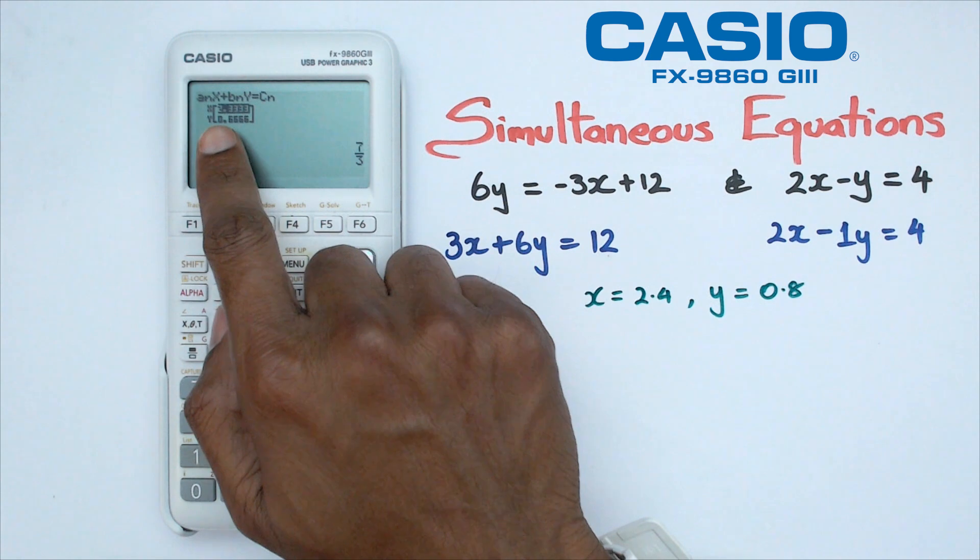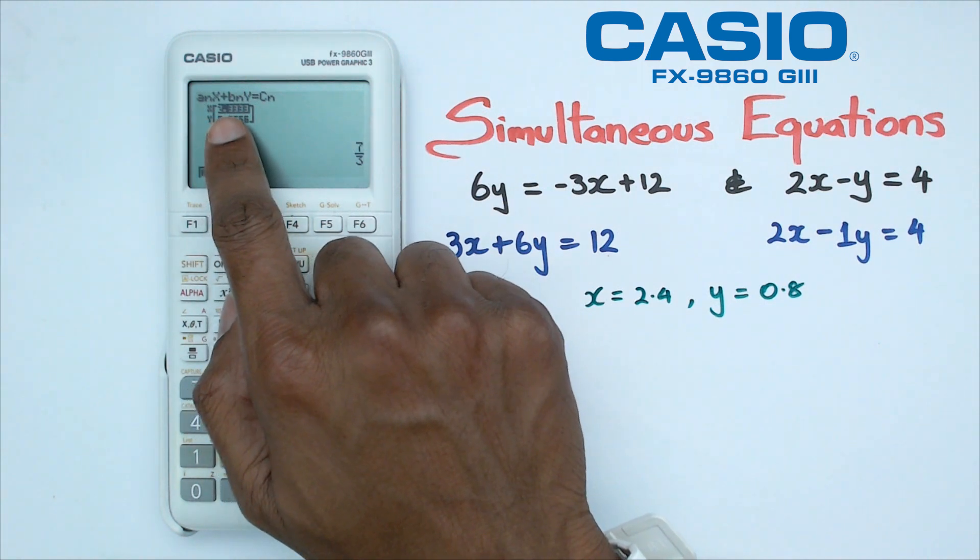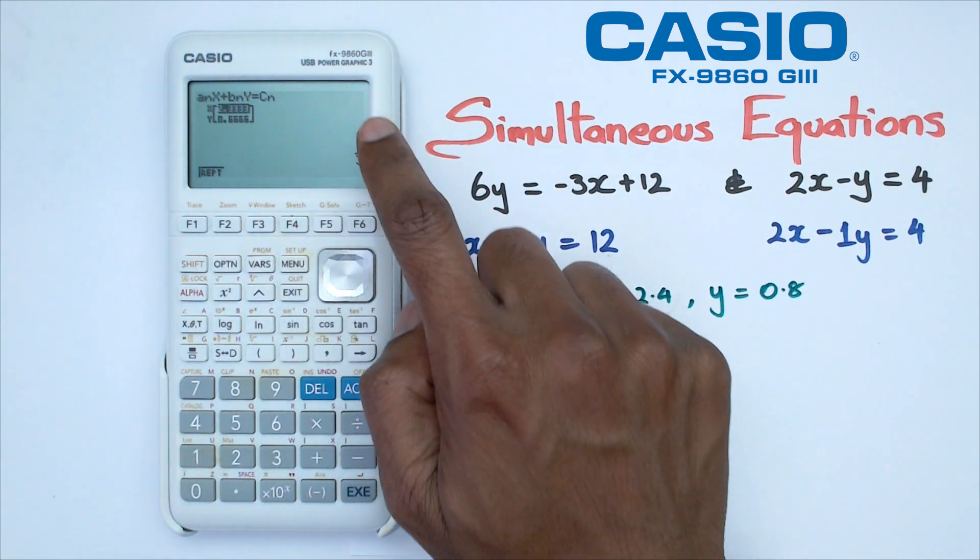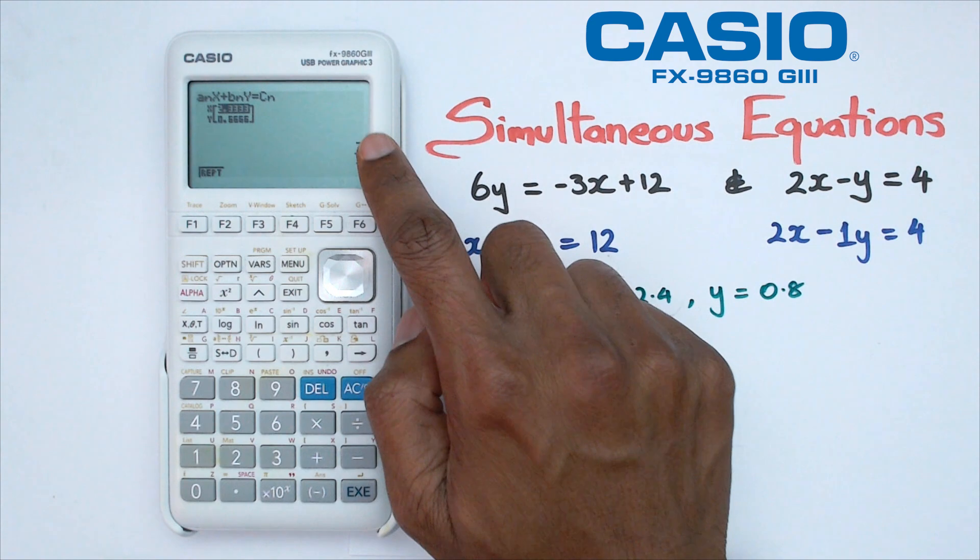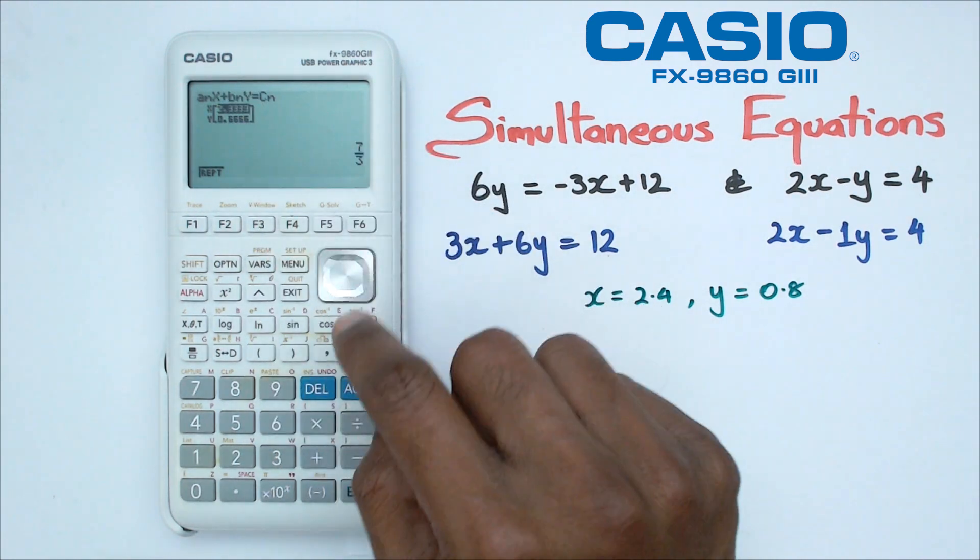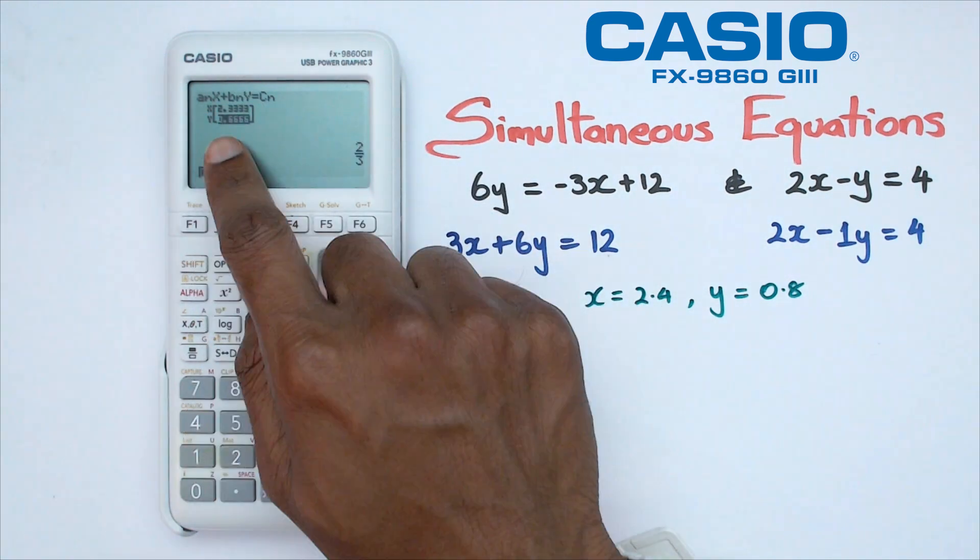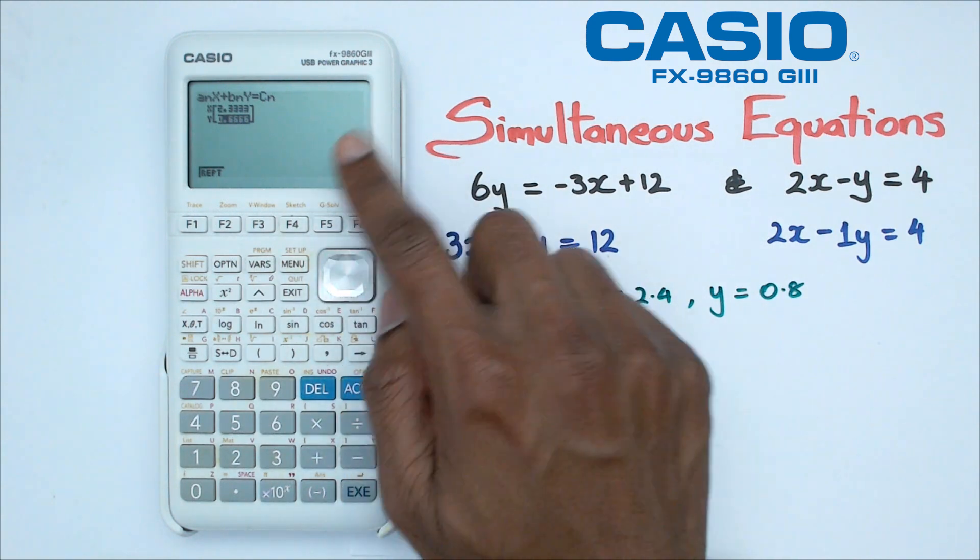So as you can see, one of the solutions happens to be 2.3333. But in here, it's actually showing you the fraction equivalent of that particular answer. And as you can see, we've got 0.6666, which is a recurring decimal. And that is equal to two thirds.